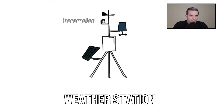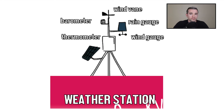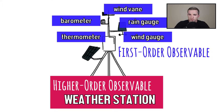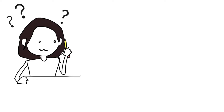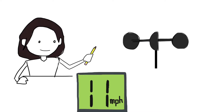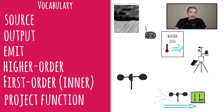The meteorologist will only emit a new update if she determines the data is sufficient to require one. Now the weather station is equipped with multiple instruments: a barometer, a wind gauge, a wind vane, a rain gauge, a thermometer, and more. So the weather station is an observable of observables — we call this a higher-order observable, whereas the individual instruments are all first-order observables. The first-order observables that make up the higher-order observable are also called inner observables. The instruments are not themselves weather — they are evidence of the weather. The wind gauge projects actual wind into a reading, making it a project function.